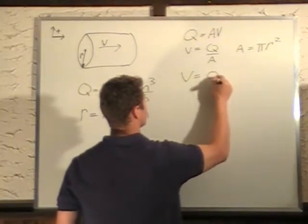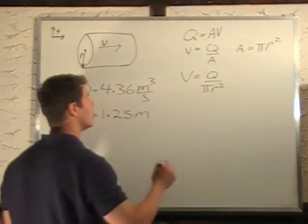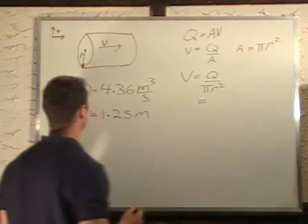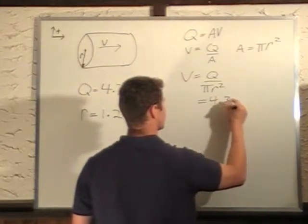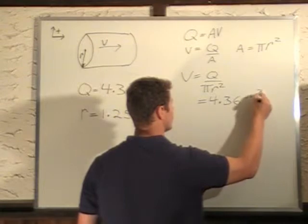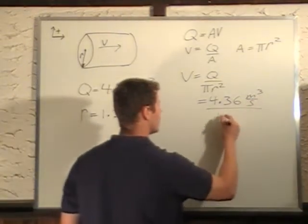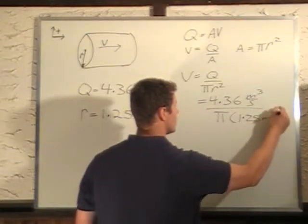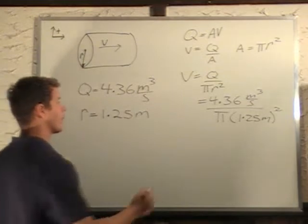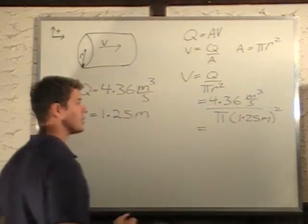V equals Q over pi r squared. So we solve our numbers into here: Q is 4.36 meters cubed per second, all divided by pi times 1.25 meters squared. Pi is 3.14, we plug all our numbers in there.